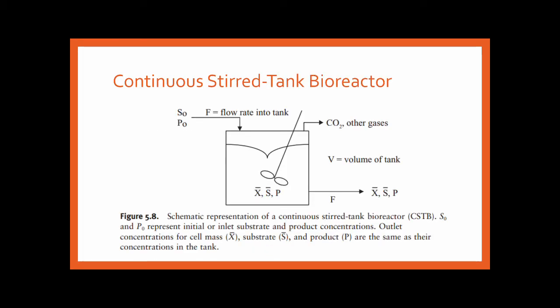This is a schematic representation of a continuous stirred tank bioreactor. You have flow rate coming in with biomass, substrates, and product inside. It is a stirred tank with an impeller, and the outflow containing biomass, substrate, and product exits the reactor.